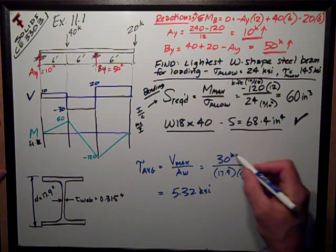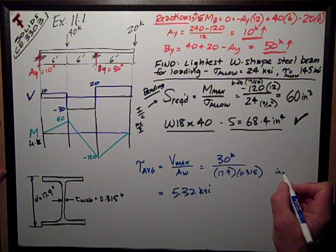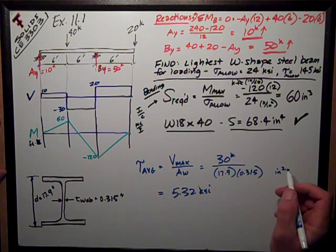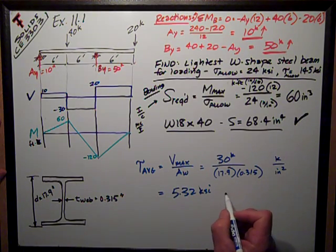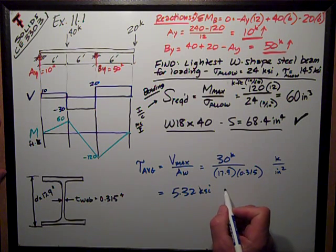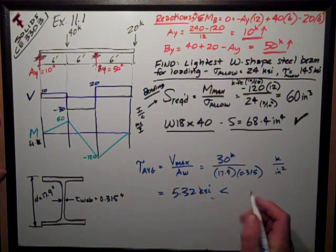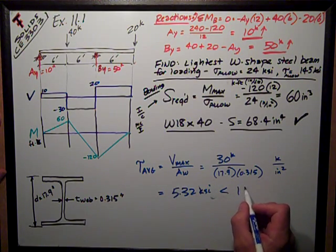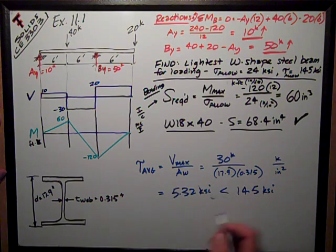Real quick check, I've got kips on the top and I've got inches times inches or inches squared on the bottom. So I do have KSI. I compare that to my allowable, which is 14.5, and as it usually is for steel beam design, it's well within that limit, so it's okay.